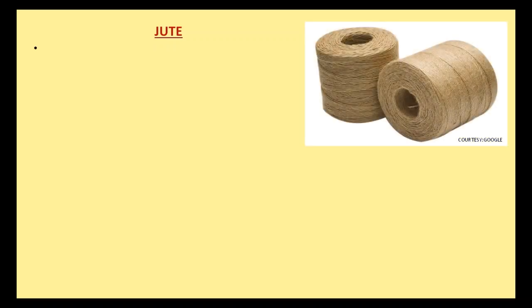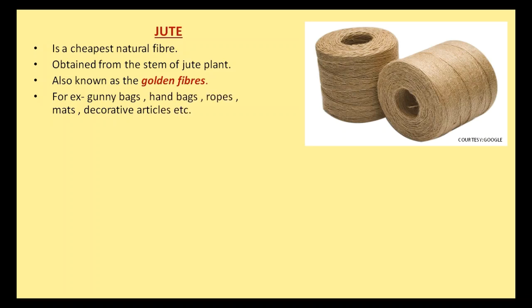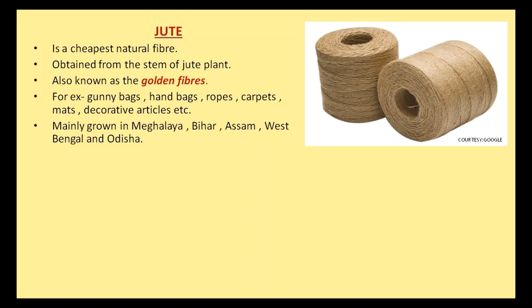Hello friends. In this video we will study some natural fibers in detail. First is jute. Jute is the cheapest natural fiber which is obtained from the stem of the jute plant. Jute is also known as the golden fiber. For example, gunny bags, handbags, ropes, carpets, mats, decorative articles, etc.